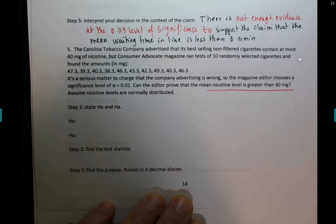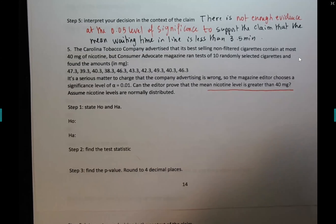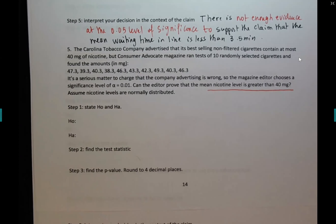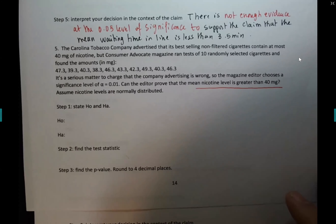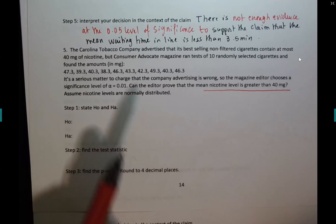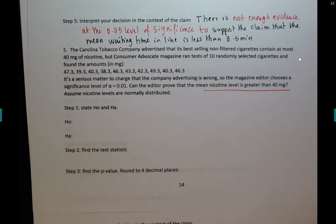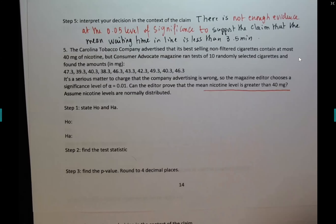Assume nicotine levels are normally distributed. When you make a claim and accuse somebody of wrongdoing, you better be able to verify it — otherwise the person can come after you later. This is the same reason they say it's a serious matter. So how would you state the null and the alternative hypothesis?